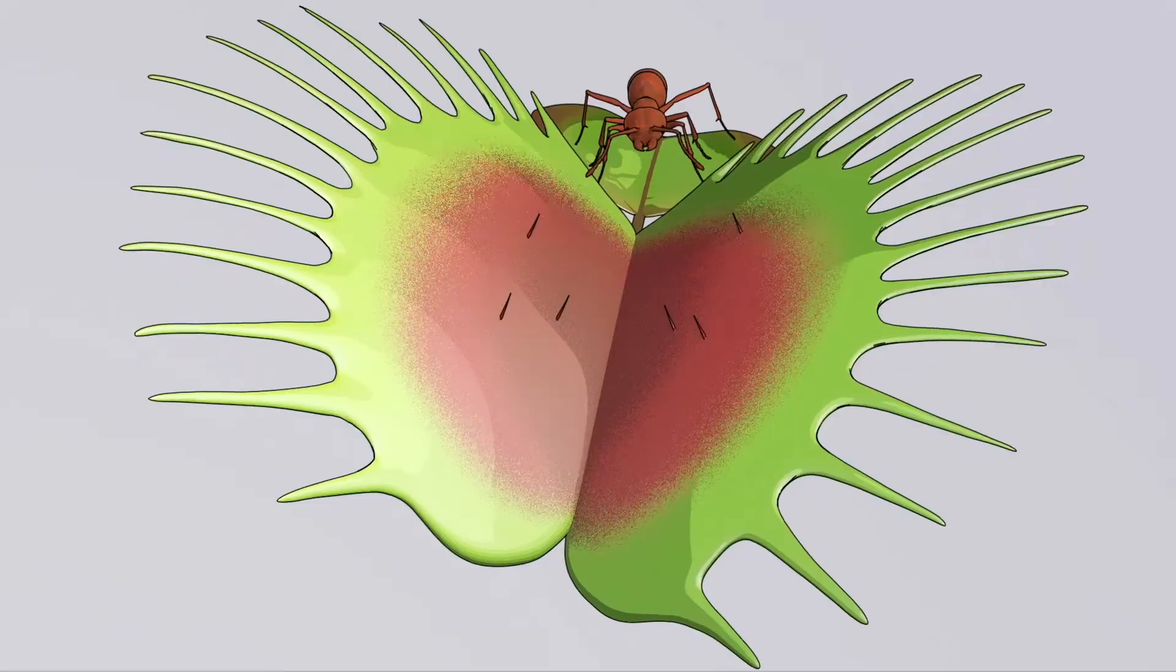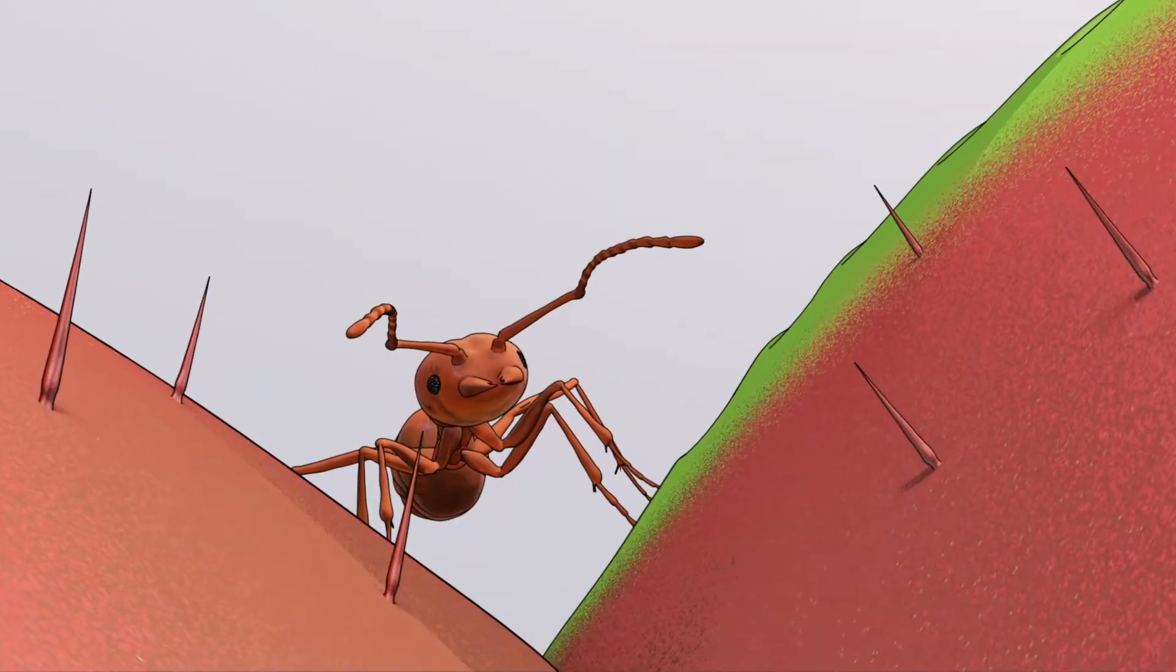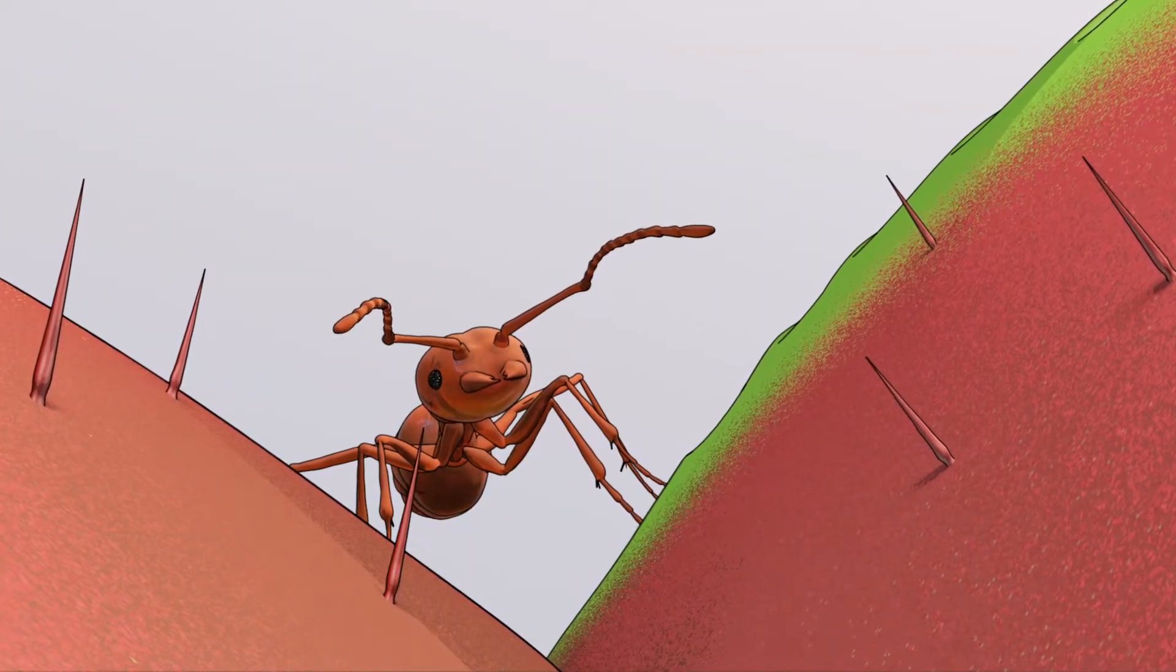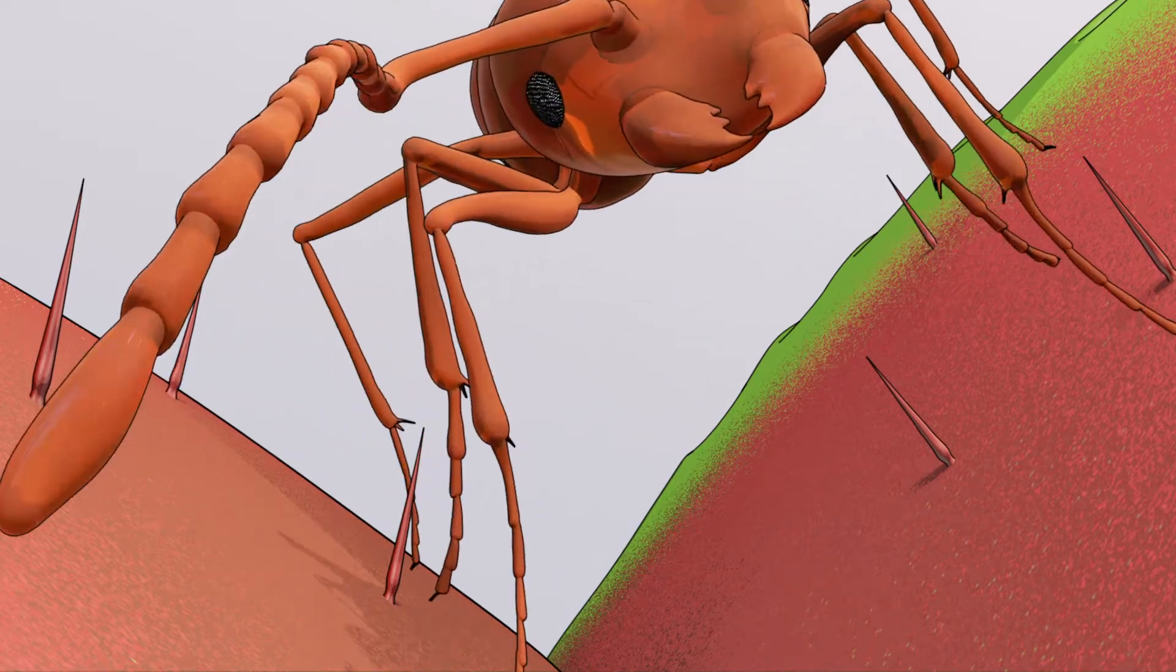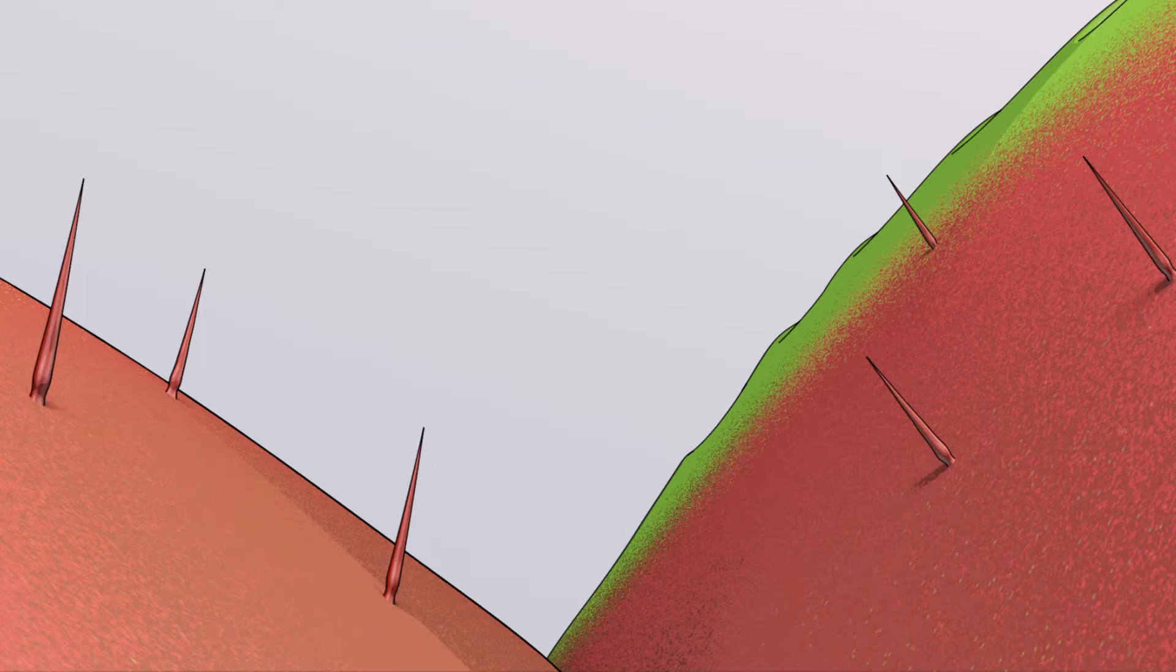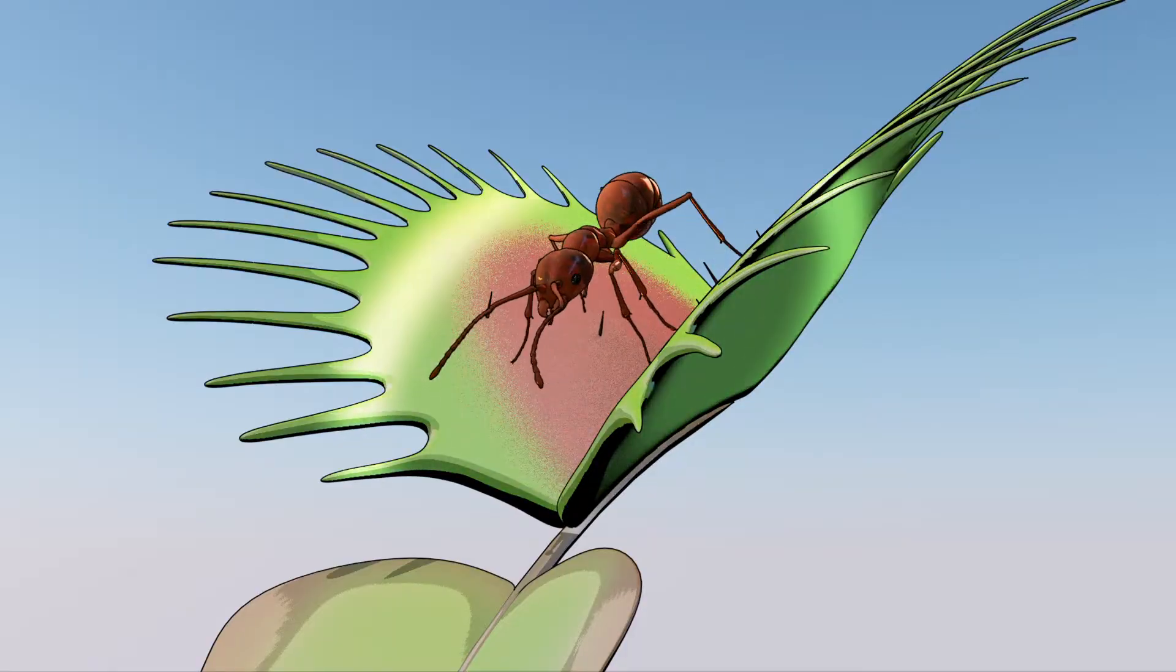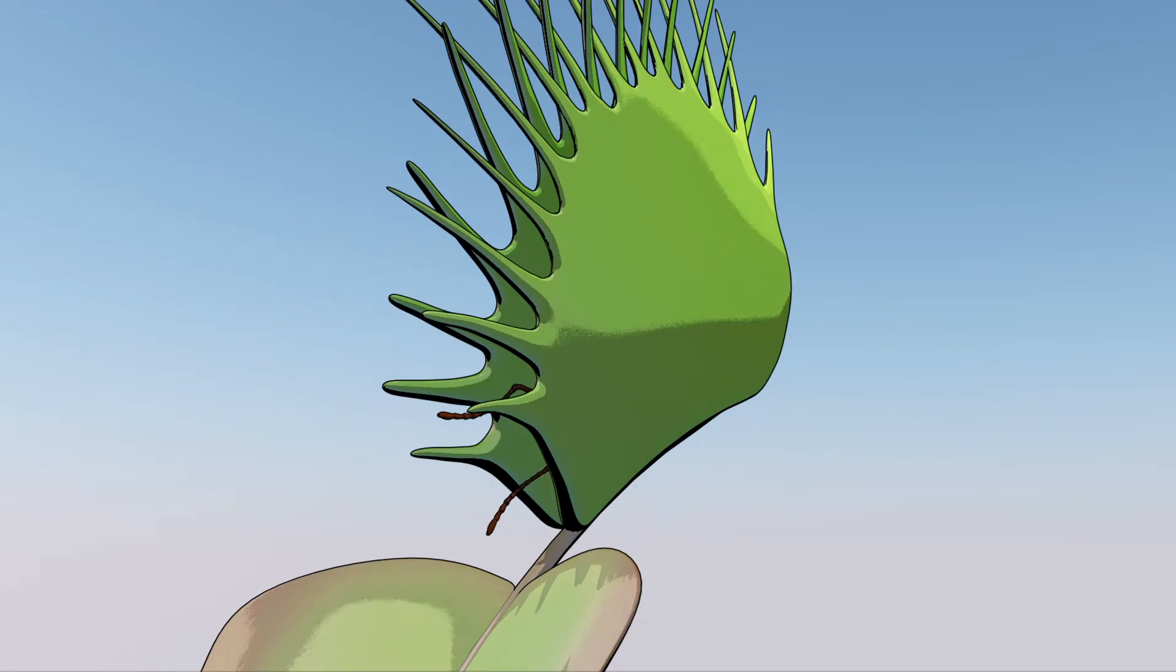Each leaf is composed of two symmetrical lobes with three tiny sensitive trigger hairs on the inner surface. When an animal touches one of these hairs, initially nothing happens, but if the hair is touched again within 30 seconds, the lobes quickly close to entrap the animal.